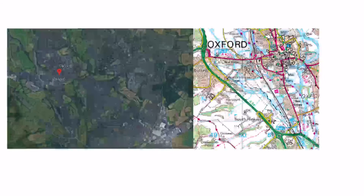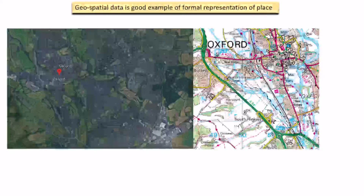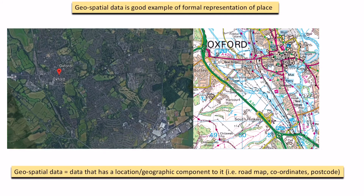The last thing to consider before we look at pros and cons is geospatial data, which essentially means a location that has had data applied to it. The most obvious example would be Google Earth — we have data about everything that's there, but then we apply it to a map and give it a location. We're applying geographic information systems to an actual map location, and therefore we can get coordinates and road maps. Postcodes are a really good example of geospatial data.